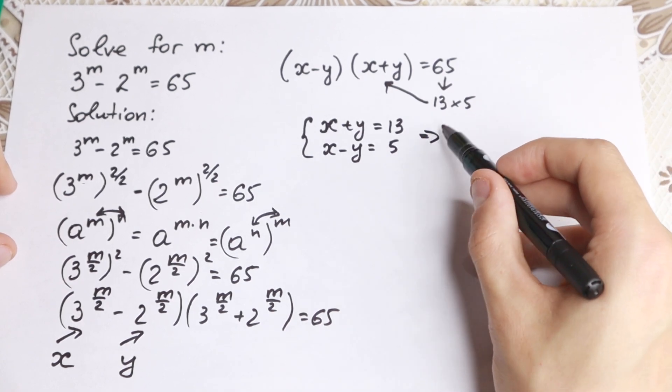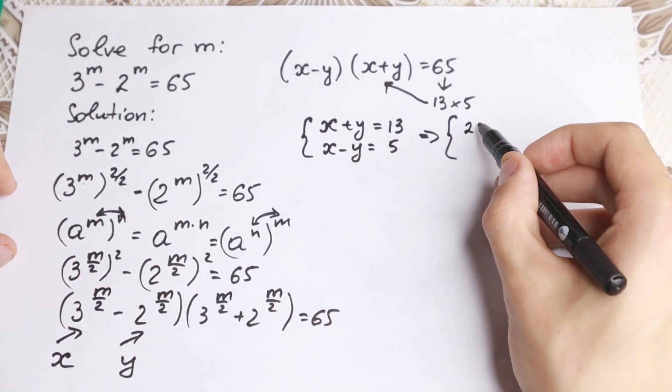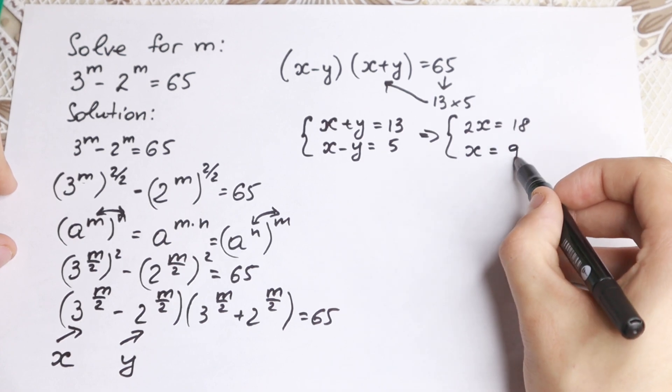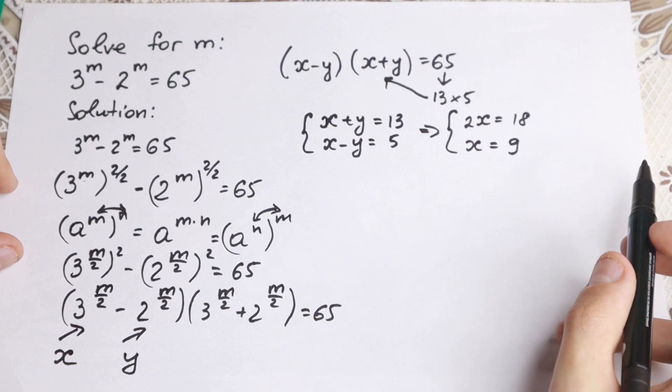Classic system of equations, adding both equations, canceling y. We have 2x equal to 18 and x equal to 9. We find our x. But what about y? Where can we find this y?